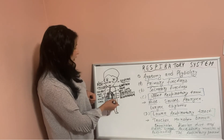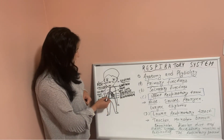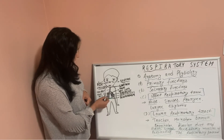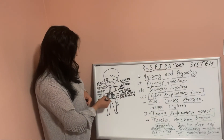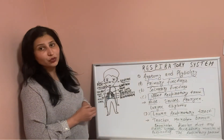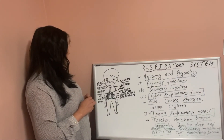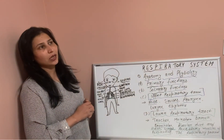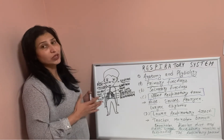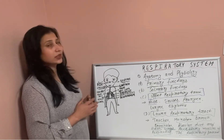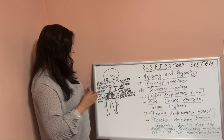After the bronchioles, there are the alveoli and alveolar ducts. The alveoli have a flower-like structure with alveolar ducts in between. The cells in the alveoli produce surfactant — without surfactant, the alveoli would collapse. Alveoli are essential for the respiration process.